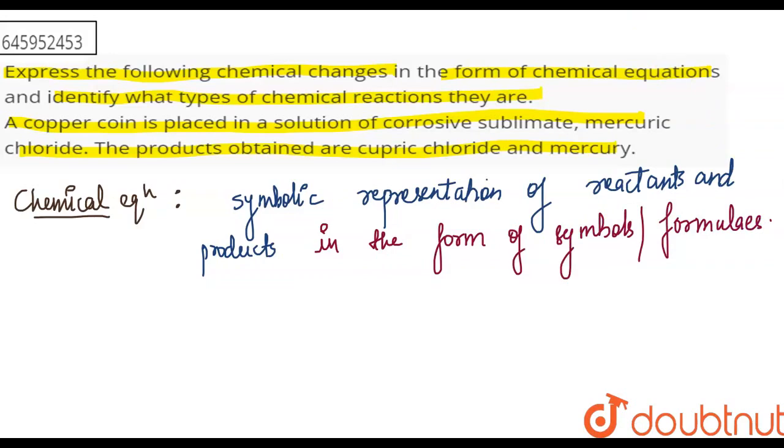Now, let's talk about this reaction. A copper coin is placed in a solution of corrosive sublimate, mercuric chloride. The products obtained are cupric chloride and mercury.